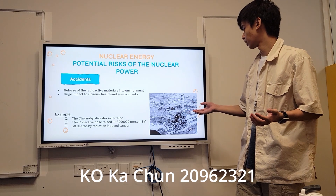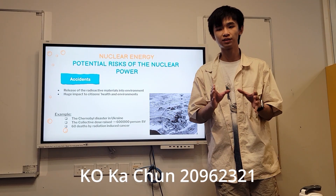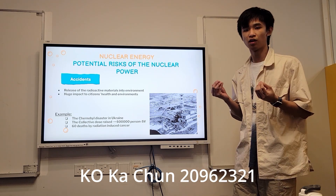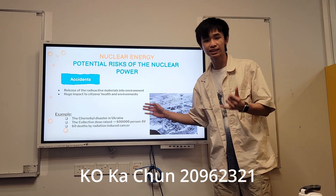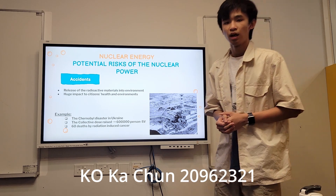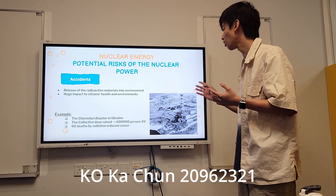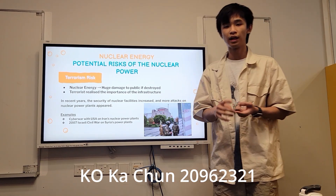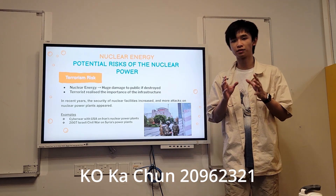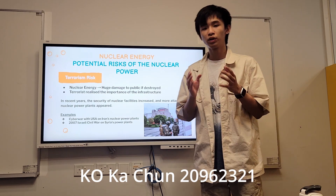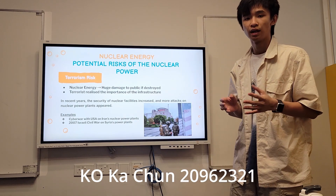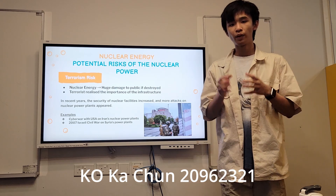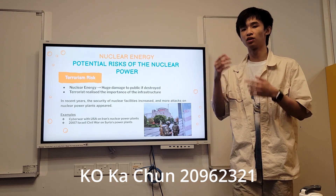As seen in the Chernobyl disaster in Ukraine, which forced 350,000 people to evacuate and damaged citizens' health — the average collective dose in Ukraine was raised significantly in the week after the accident — making Chernobyl no longer liveable. After these two major disasters, Chernobyl and Fukushima, the importance of nuclear facilities became apparent to terrorists. Terrorists may target power plants to cause a major release of radioactive substances, making the surrounding area uninhabitable.